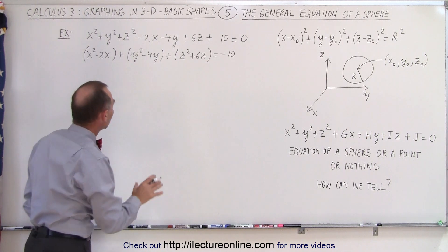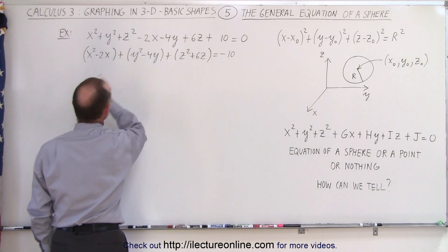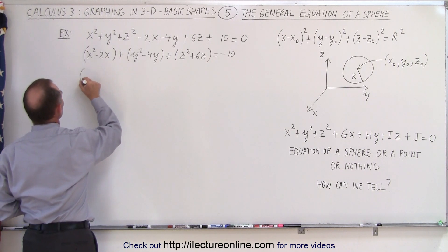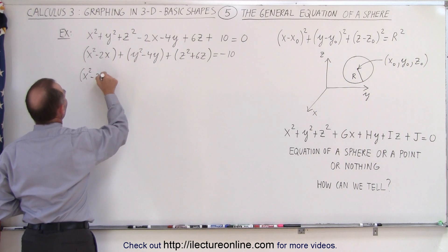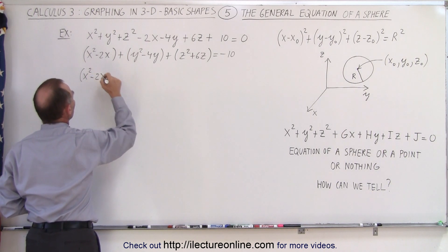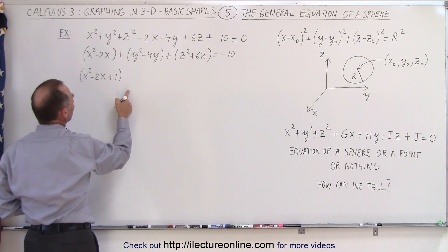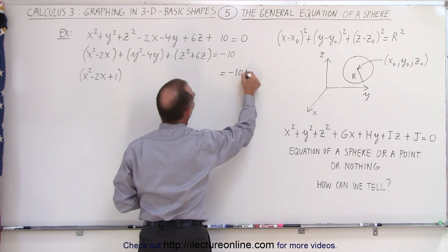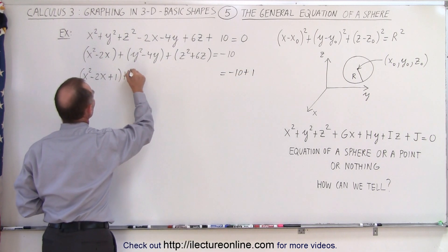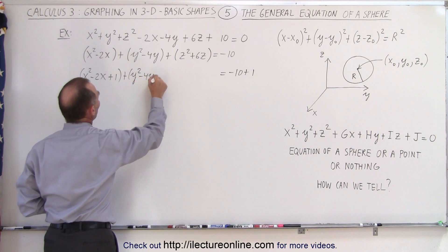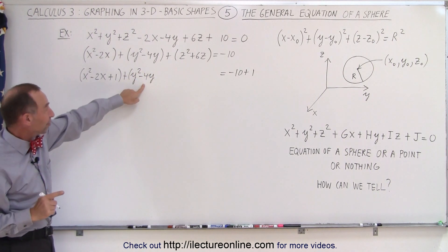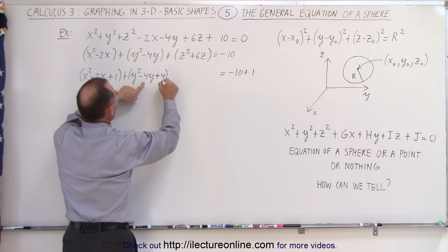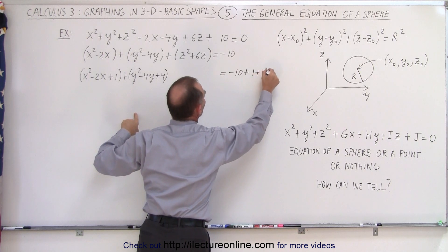So what we're going to do now is we're going to complete the square of each of these three binomials. So we take half of that and square it and add it, so this becomes x squared minus two x, half of negative two is negative one, square becomes plus one, but since we added a plus one on the left side, we're going to have to add a plus one on the right side. We do the same over here, so this becomes y squared minus four y. We take half the middle term, which is a negative two, square that, that gives us plus four, so we're going to add a plus four, which means we must add a plus four here as well.